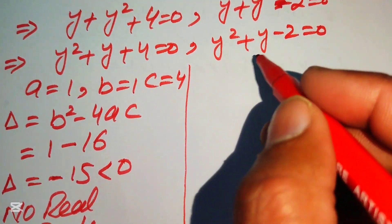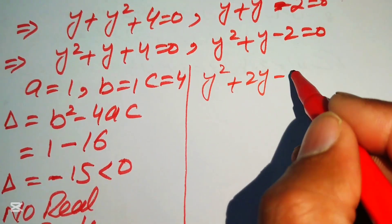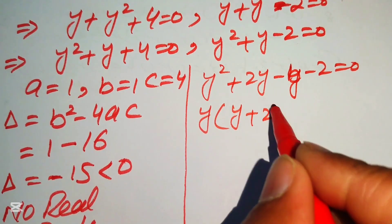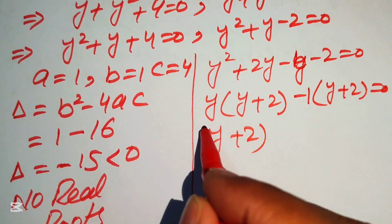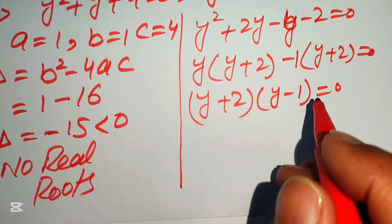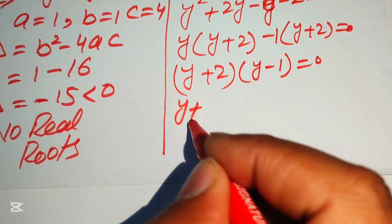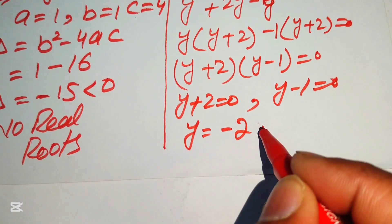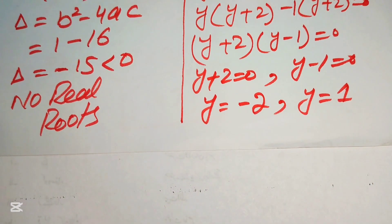For the second equation y² + y − 2 = 0, we factor: y² + 2y − y − 2 = 0, giving y(y+2) − 1(y+2) = 0, so (y+2)(y−1) = 0. Therefore y = −2 or y = 1.